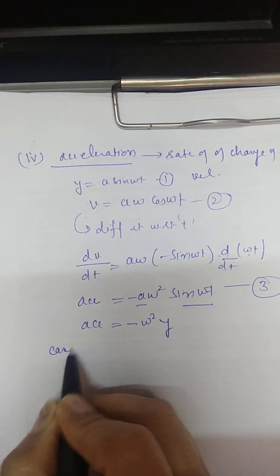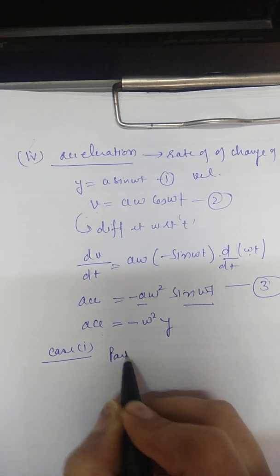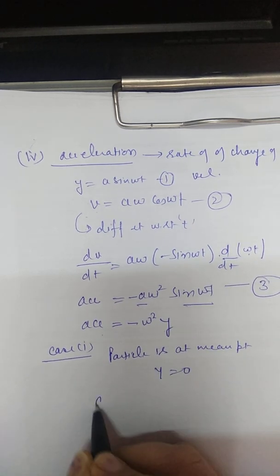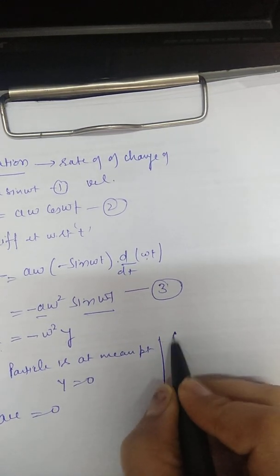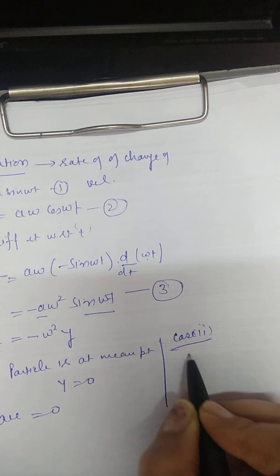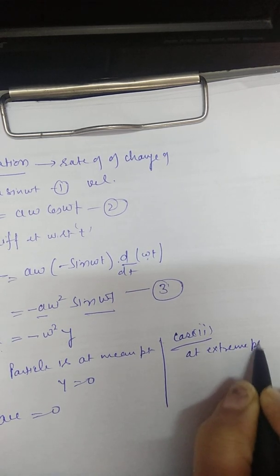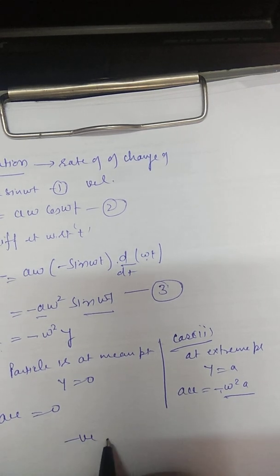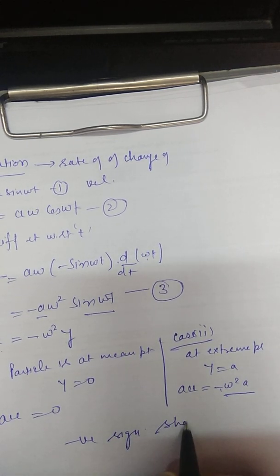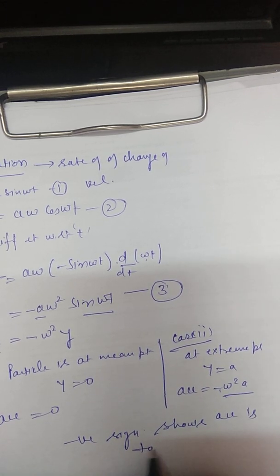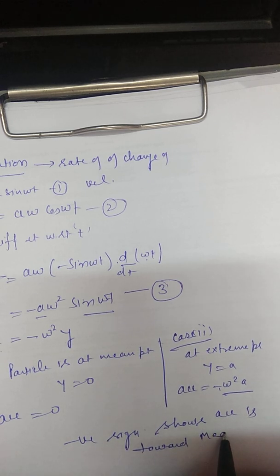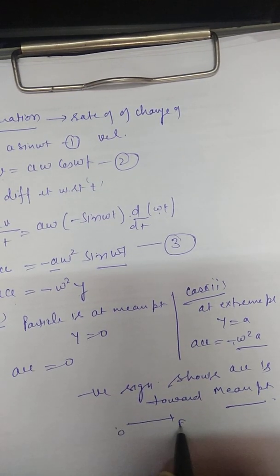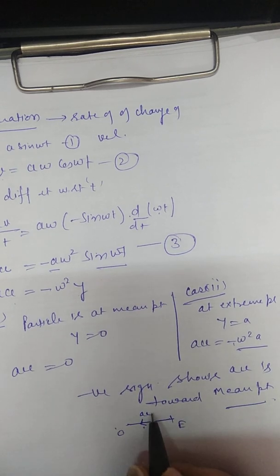For acceleration, two cases: Case 1 — at the mean point, y equals 0, so acceleration is zero. Case 2 — at the extreme point, y equals a, so acceleration equals minus omega squared times a. The negative sign shows that acceleration is directed toward the mean point. So whenever a particle is in simple harmonic motion, its acceleration always points toward the mean position.